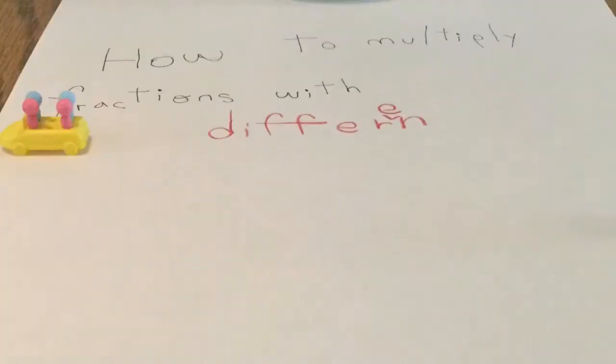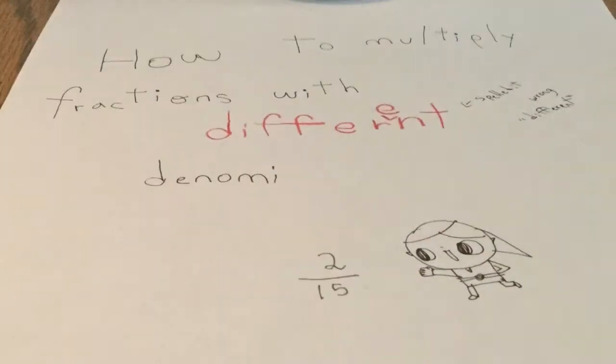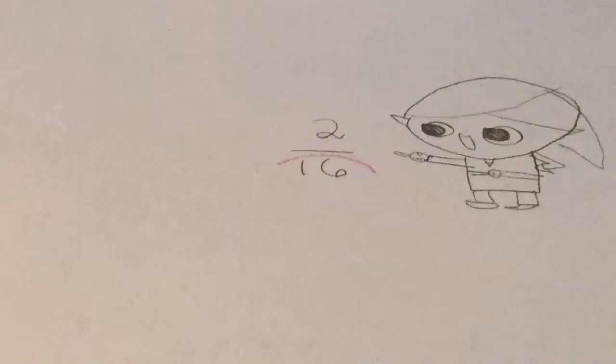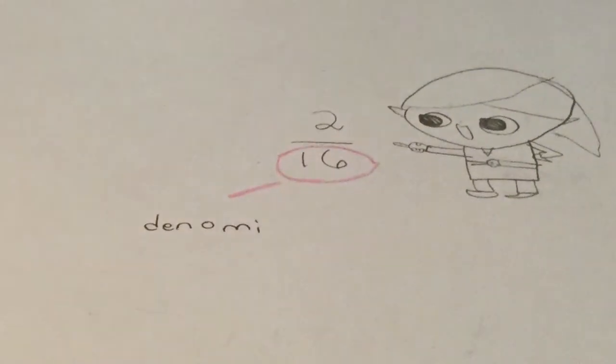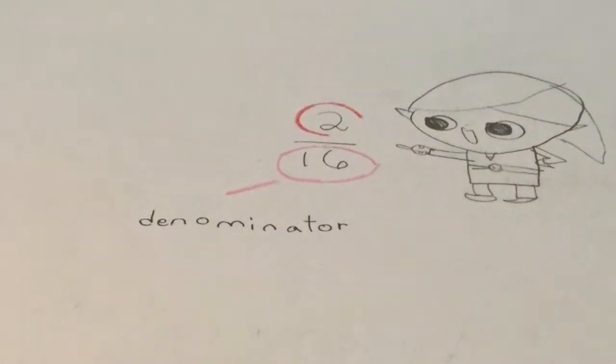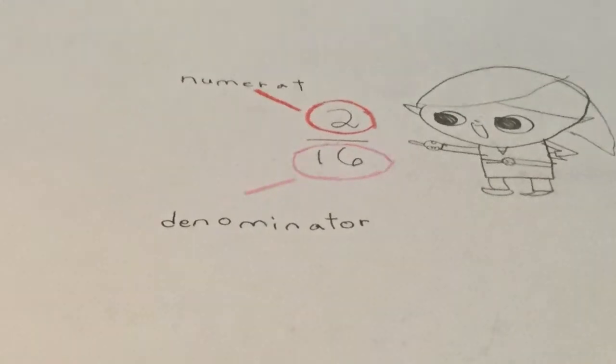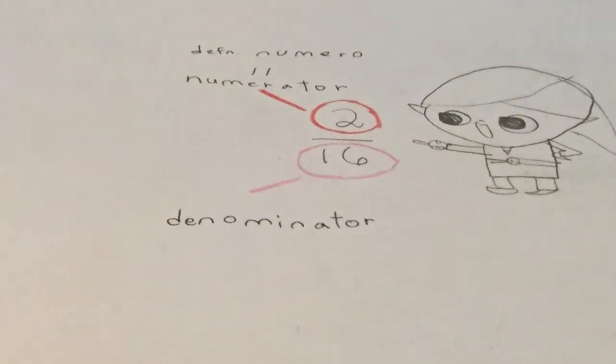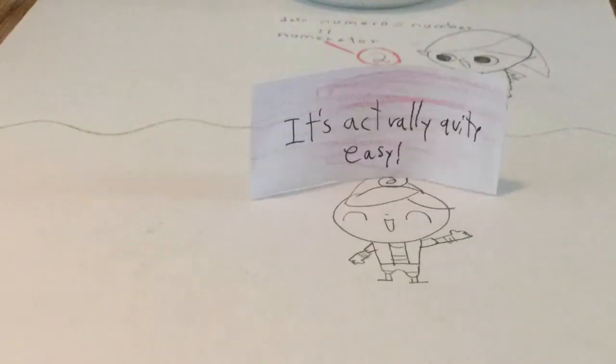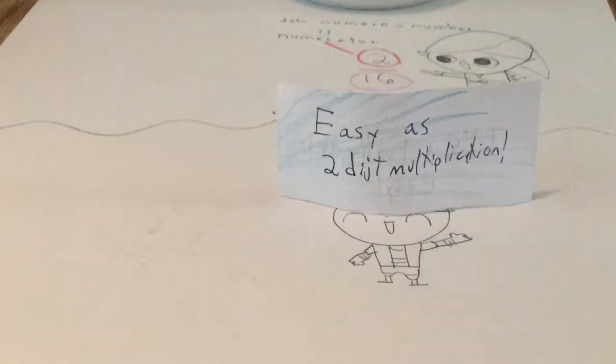How to multiply fractions with different denominators. As you might know, this bottom number here is called the denominator, and the top number is called the numerator, as the definition is numero, which means number. This type of math is actually quite easy, as easy as doing two-digit multiplication.